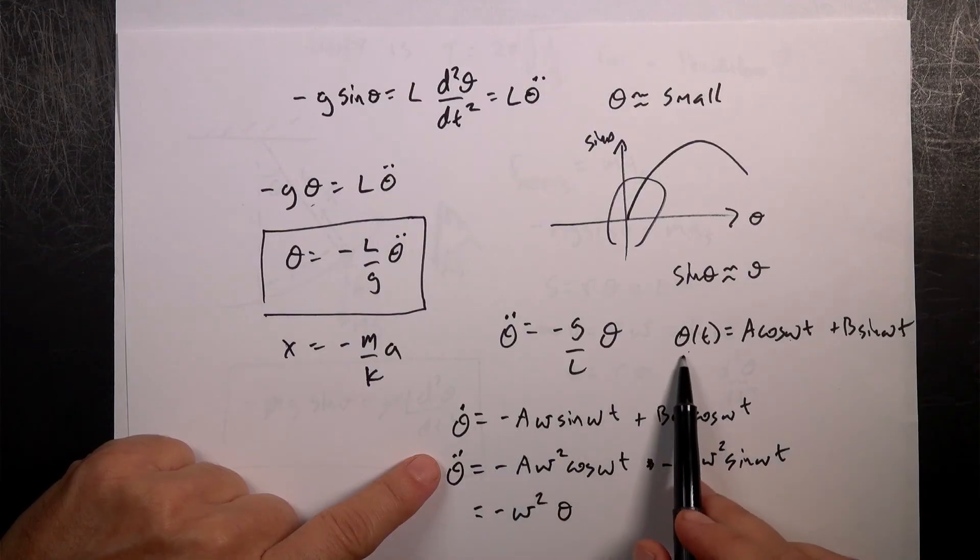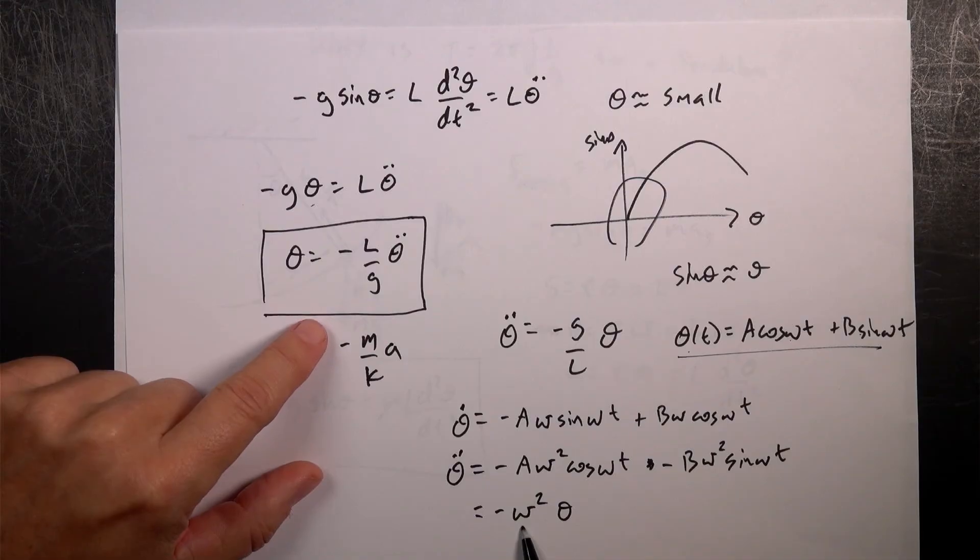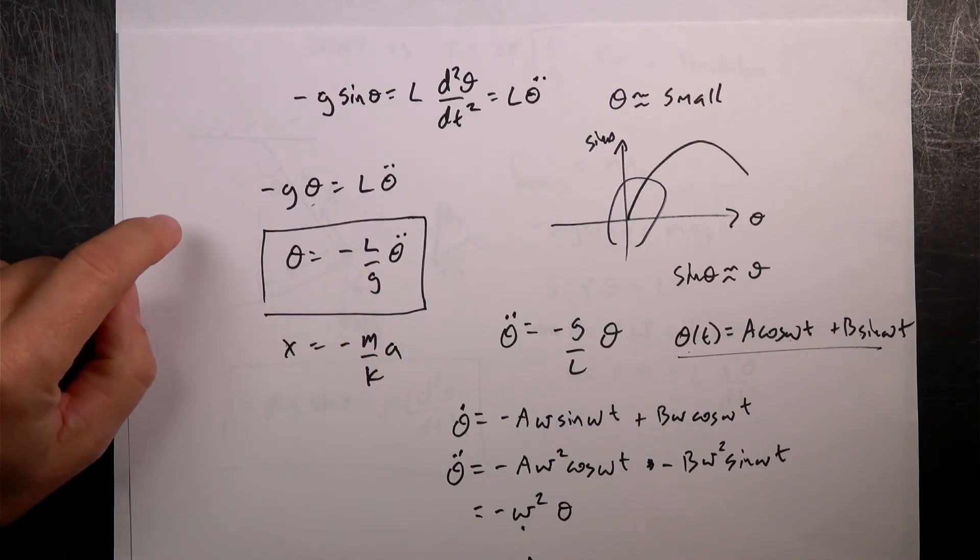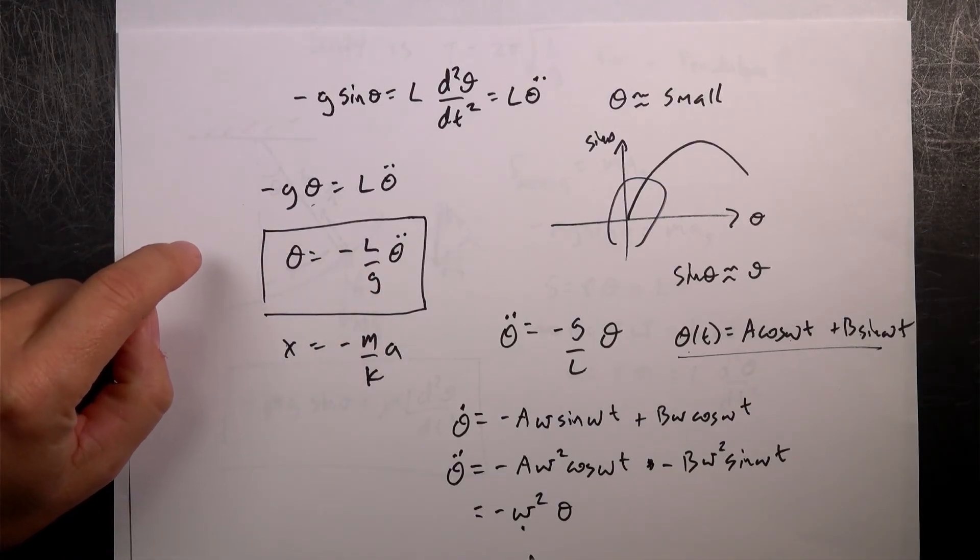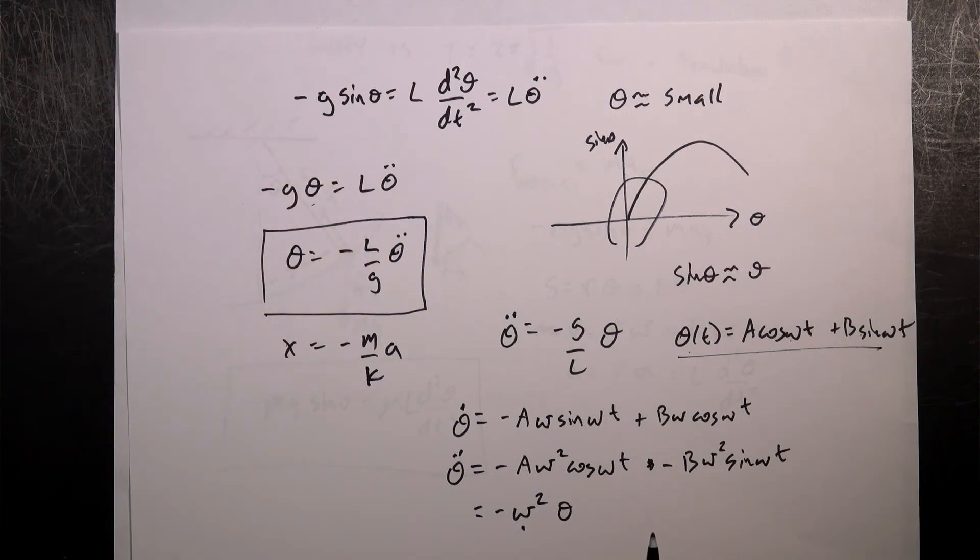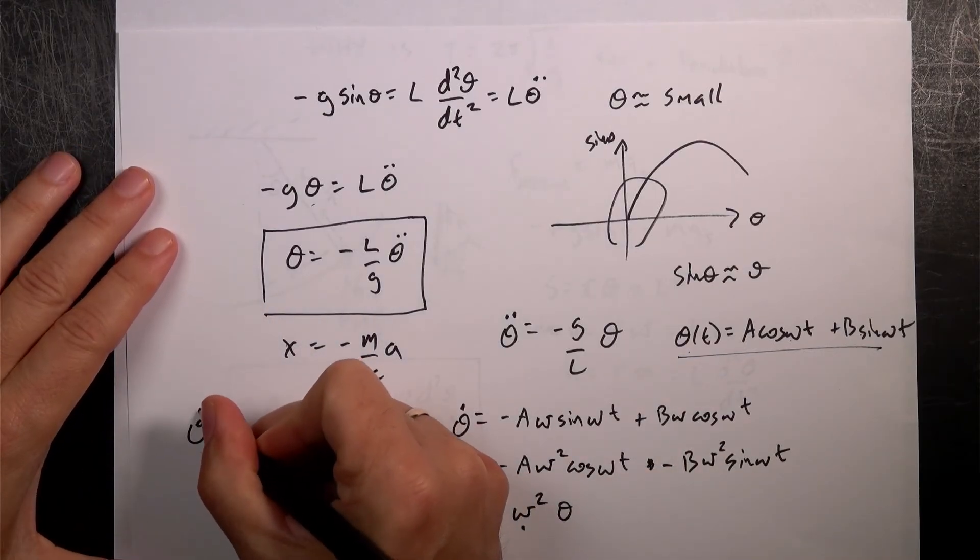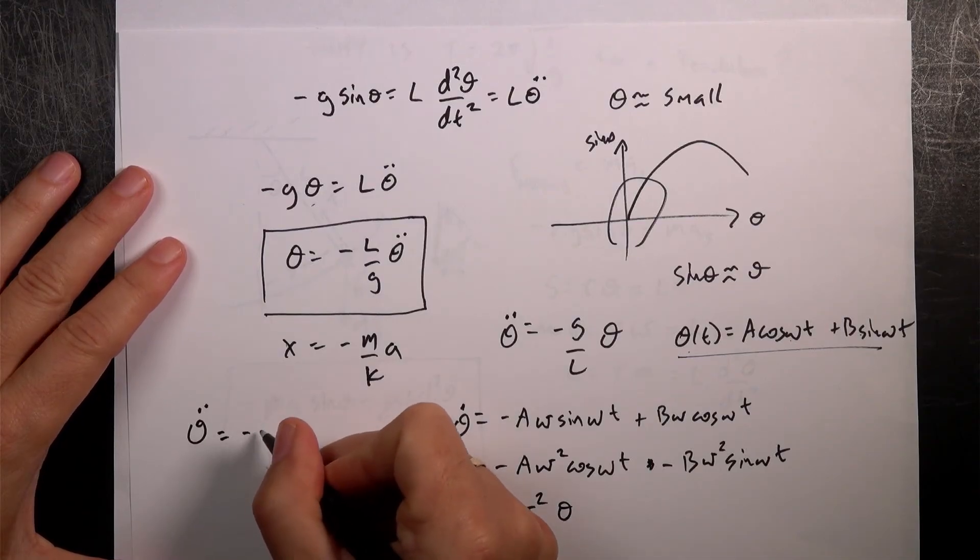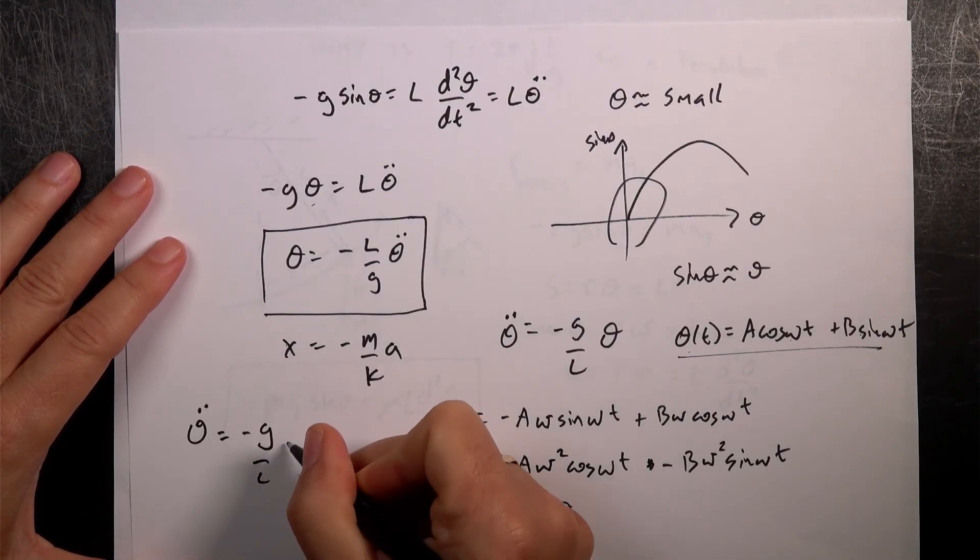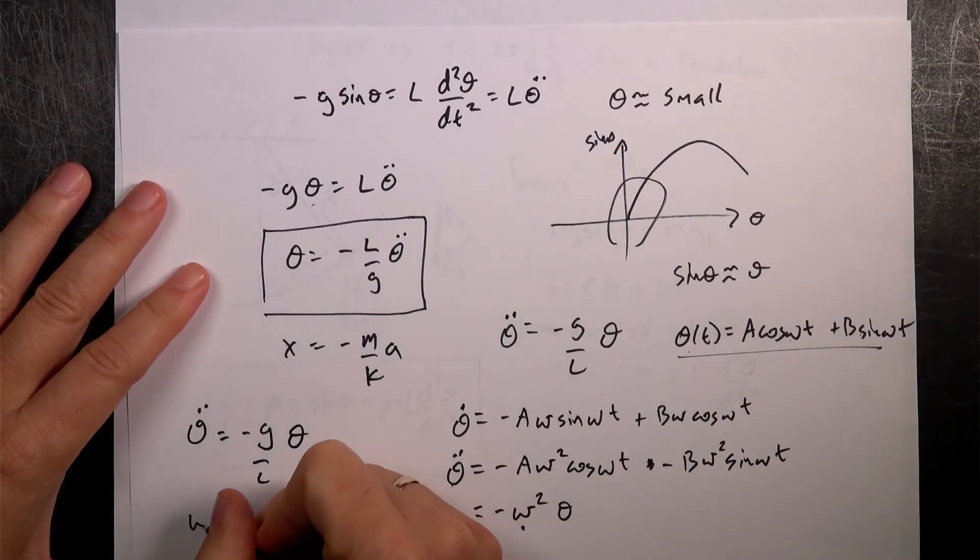So, that means that theta double dot is negative. If I have this as my theta, then theta double dot is a solution. Then, this omega squared has to be equal to, omega squared has to be, I made a mistake. Theta double dot, oh no, I did it the right way. So, I said theta double dot, I always get this confused, is negative g over L theta. So, that means that omega squared is g over L.